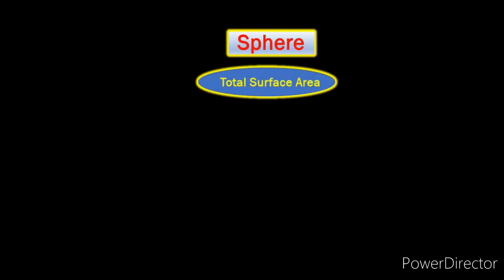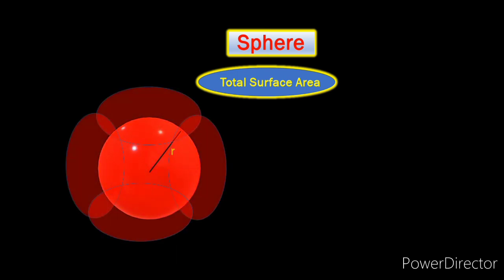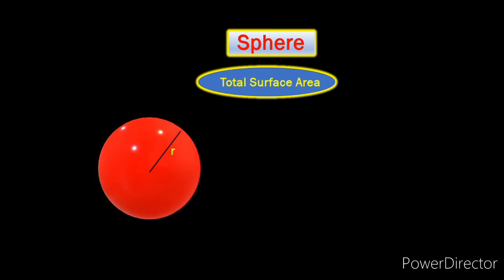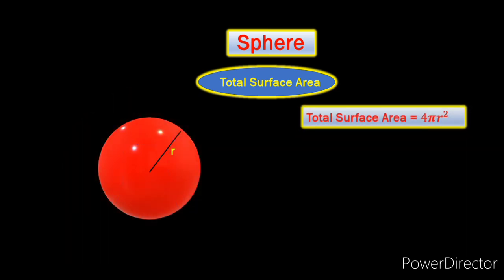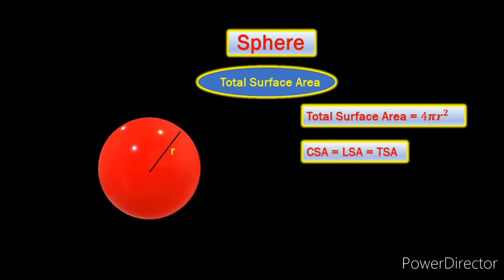Now let's find the total surface area of the sphere. This will be the addition of the four circles created in each of the four directions. The area of each circle is πR² and that's how we get the total surface area to be 4πR². Also notice that there is no flat surface in a sphere — that's why the total surface area, lateral surface area and curved surface area will all be one and the same for a sphere.